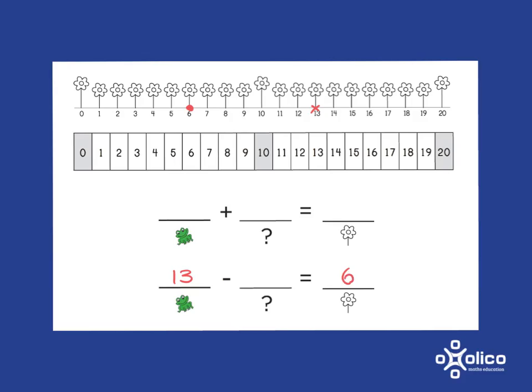Again, the frog's going to make its first jump to 10, and that's an easy take away 3. And then its second jump is going to be from 10 down to 6, and we know that 6 and 4 make 10, so it's a jump of 4. So a jump of 4 and a jump of 3 backwards means that a jump of 7 backwards has happened.